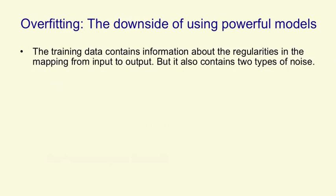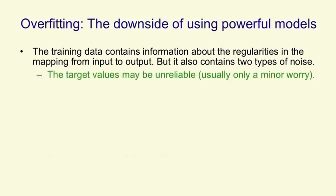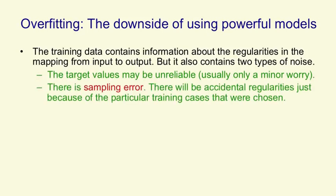The second set of issues is to do with how well the network generalizes to cases it didn't see during training. The problem here is that the training data contains information about the regularities in the mapping from input to output, but it also contains two types of noise. The first type of noise is that the target values may be unreliable, and for neural nets that's usually only a minor worry. The second type of noise is the sampling error.